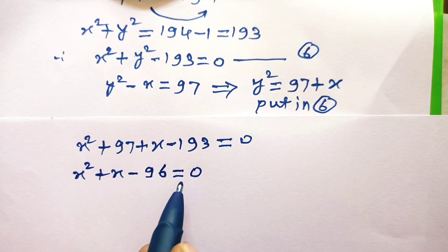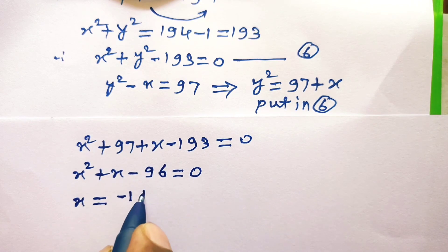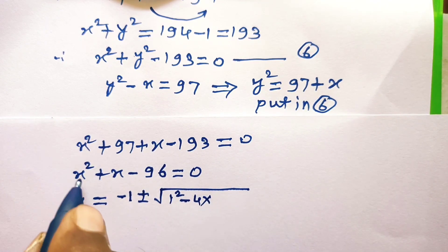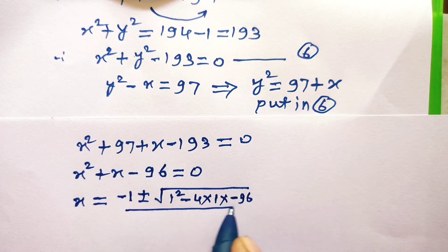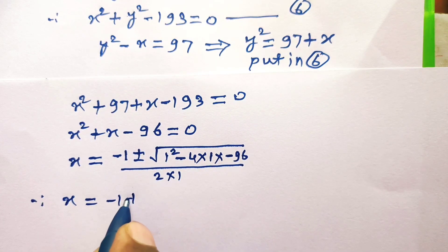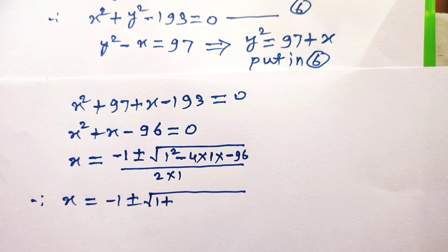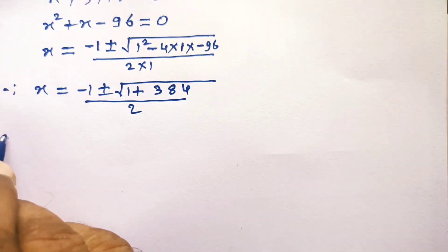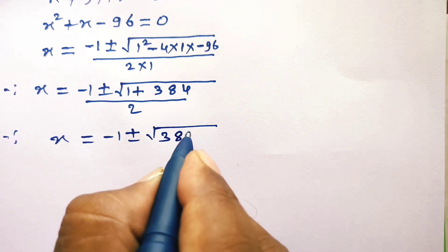This is a quadratic equation in x. Applying the quadratic formula with a = 1, b = 1, c = minus 96: x = (minus 1 plus or minus square root of 1 squared minus 4 times 1 times (minus 96)) divided by 2 times 1. This gives x = (minus 1 plus or minus square root of 1 plus 384) divided by 2, which equals (minus 1 plus or minus square root of 385) divided by 2.